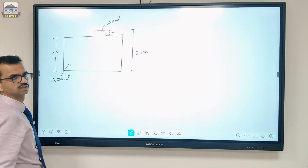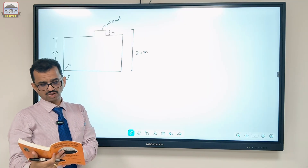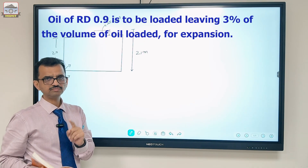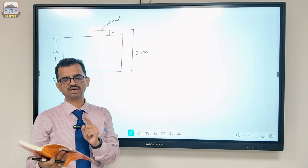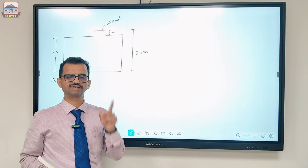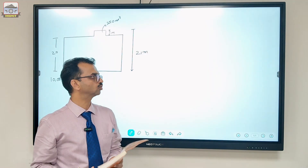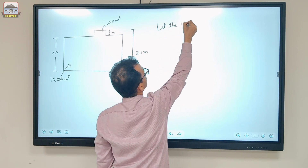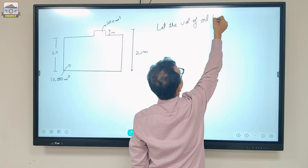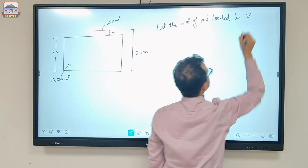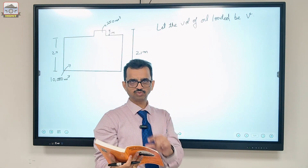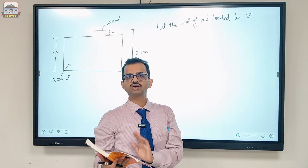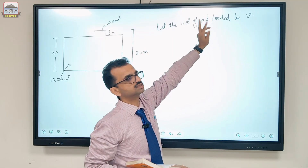The question states that oil of RD 0.9 is to be loaded, leaving 3% of the volume of oil loaded for expansion. As I said in my first video, when a question involves a percentage of the volume of oil loaded, it should create a red flag. This is a slightly tricky question. The way to start is: always let the volume of oil loaded be V. Whenever you encounter this type of question, check whether the percentage refers to the tank or to the volume of oil loaded.